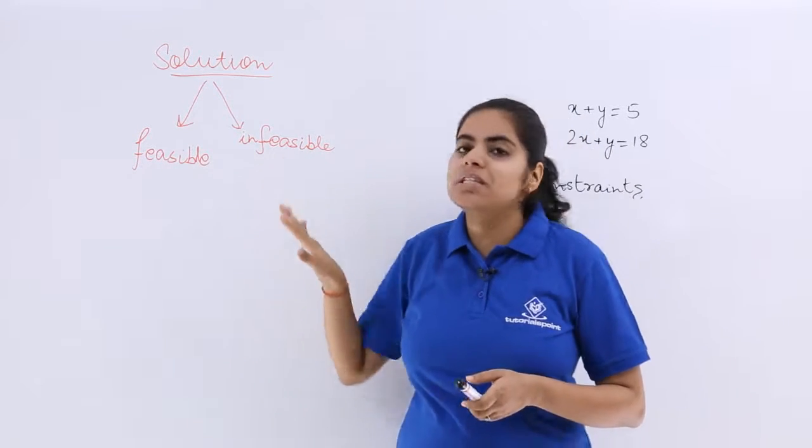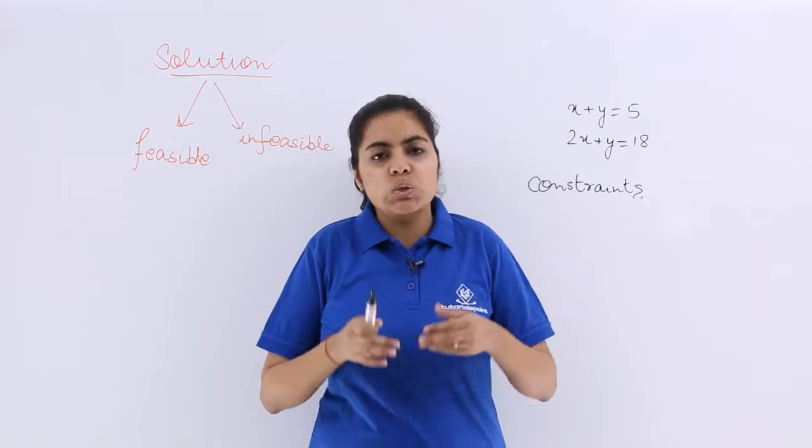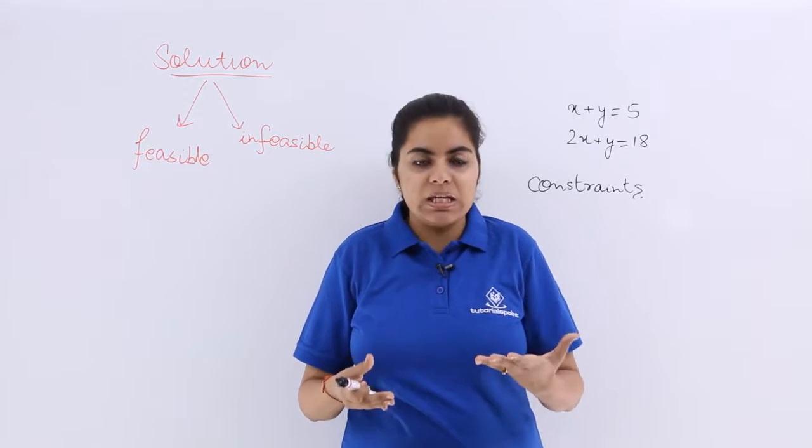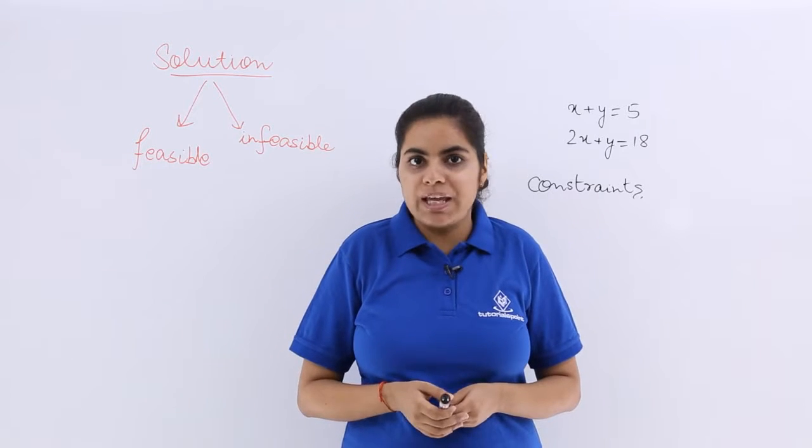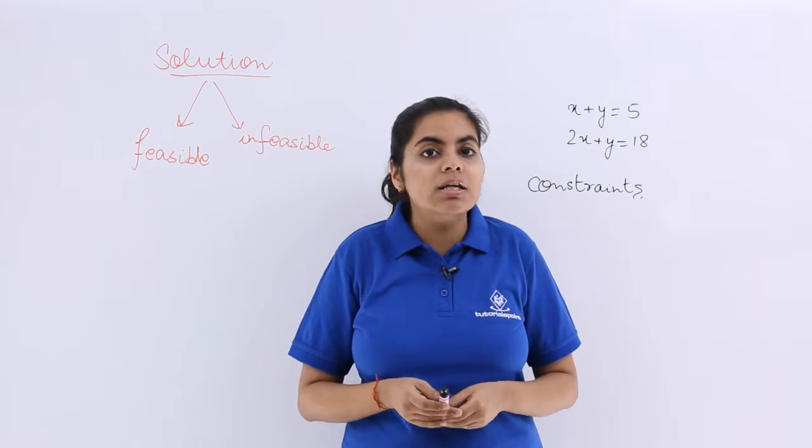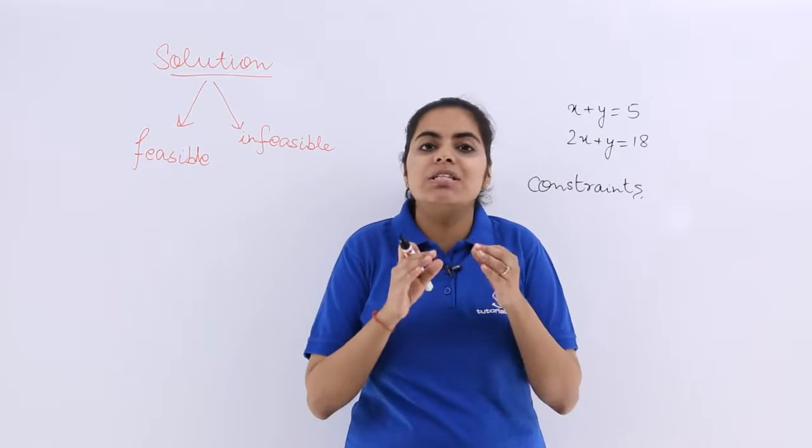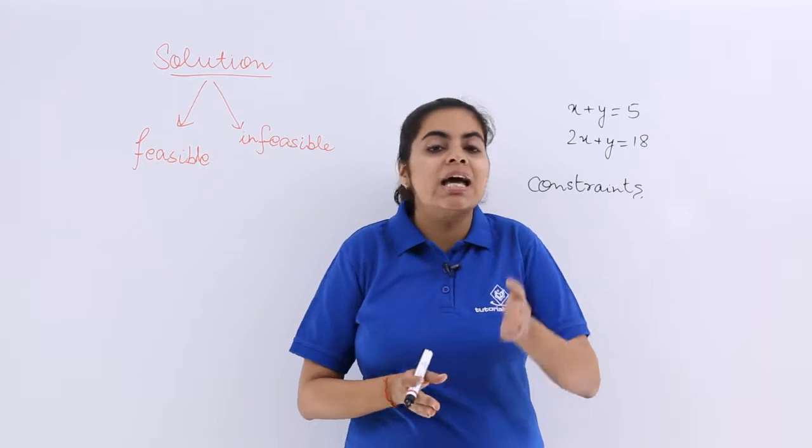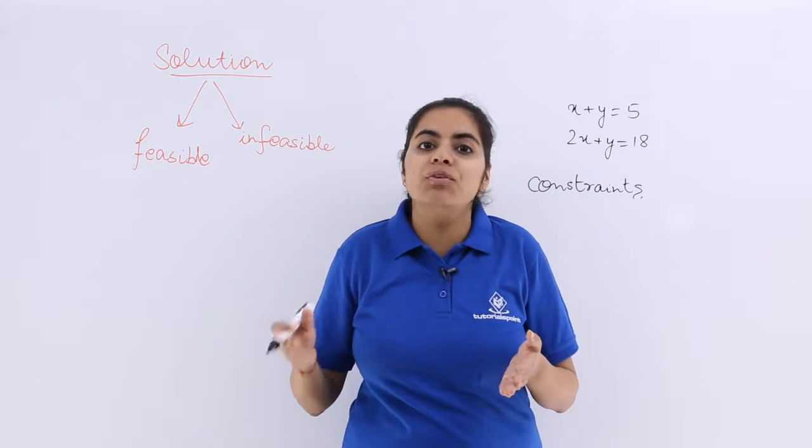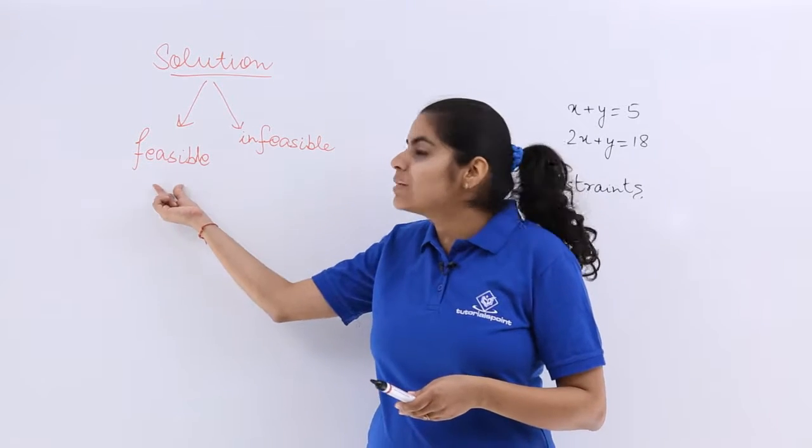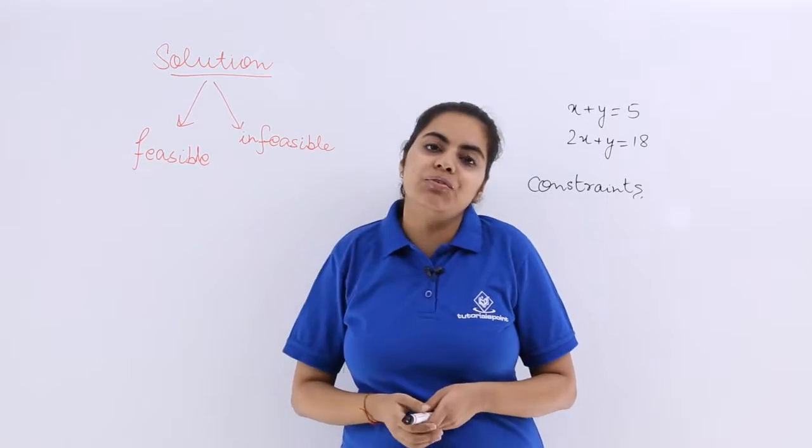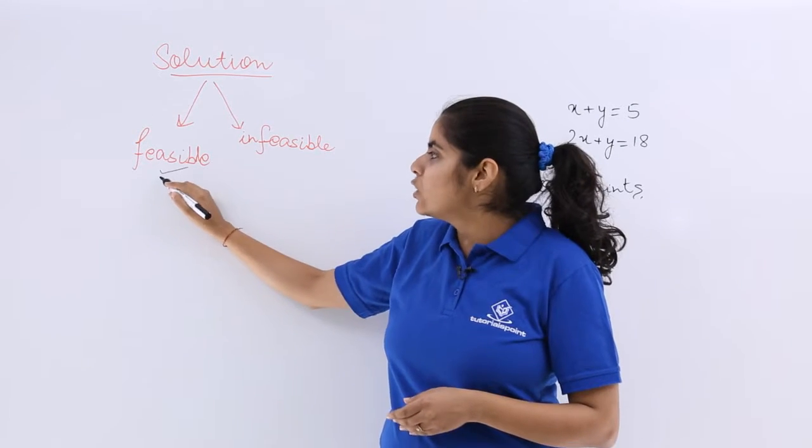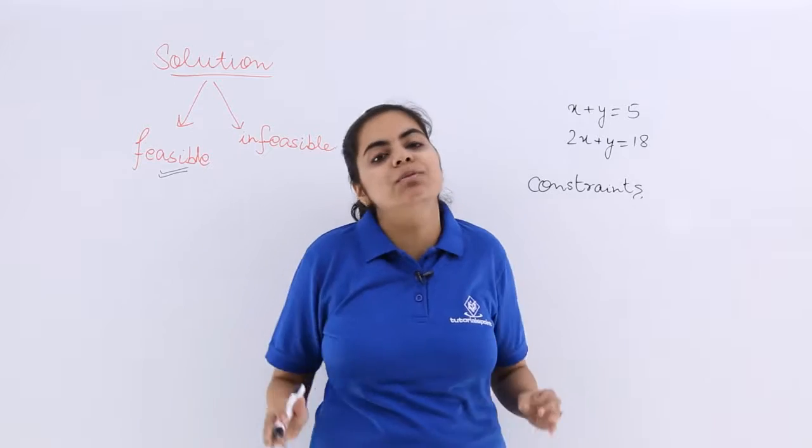The next is the two types of solutions. One is feasible, one is infeasible. So what is the feasible solution? The feasible solution means that set of variables which is very much helpful in satisfying the constraints as well as the non-negative restrictions. So not only the simple constraints but the non-negative restrictions should also be satisfied. Then only that solution set will be called as the feasible solution.